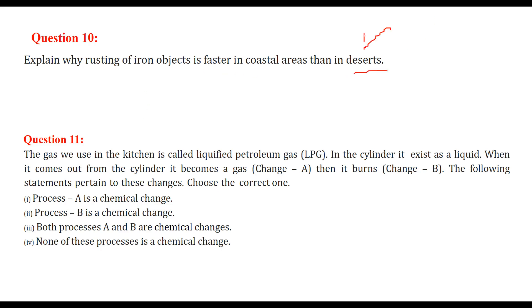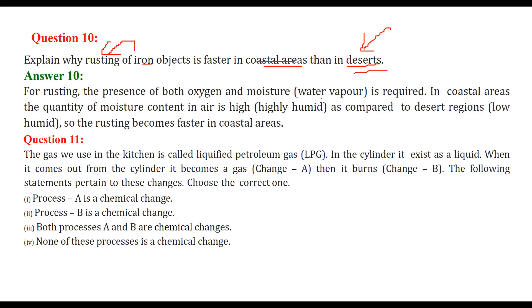Explain why rusting of iron objects is faster in coastal regions than in deserts. In deserts, there is less water vapor in the air. In coastal areas, since there is all sea water around, the water vapor content is too high. When iron has contact with water vapor and oxygen, it converts to rust. Because there is so much moisture in coastal areas, iron takes less time to convert into rust than in deserts. Rusting requires both oxygen and moisture - coastal areas are highly humid compared to desert regions, which are less humid, so rusting becomes faster in coastal areas.